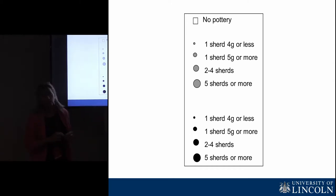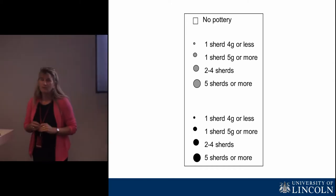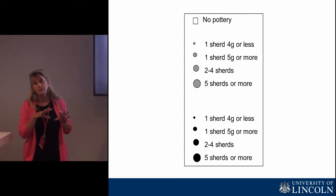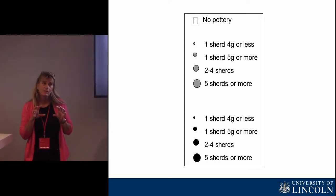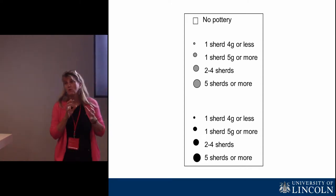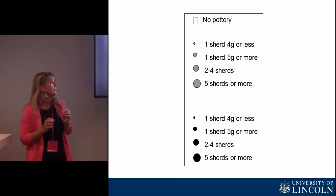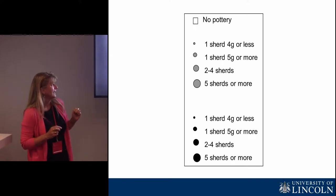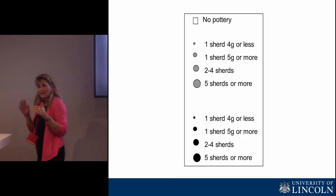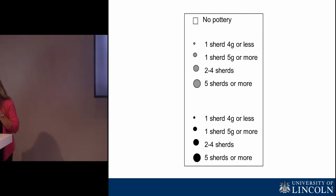A test pit which did have pottery is shown as a circle, and the larger the circle the more pottery. Correlating the data with field-walking evidence suggests that for the medieval period two sherds or more is more than you'd expect from field systems and might indicate settlement, whereas five sherds or more definitely or very likely indicate settlement. Please ignore the distinction between grey and black — that's for a different issue which I won't go into now.